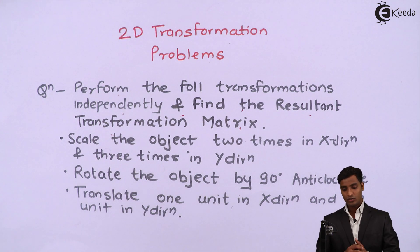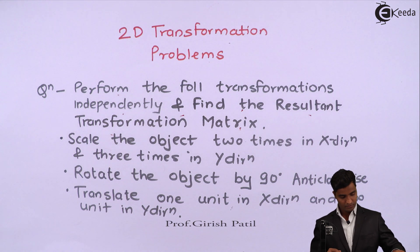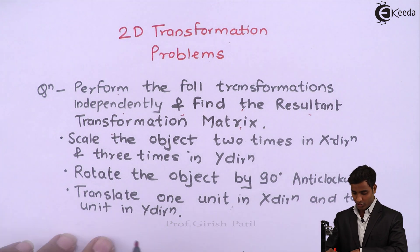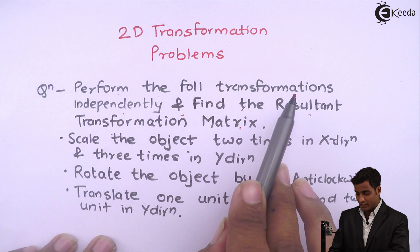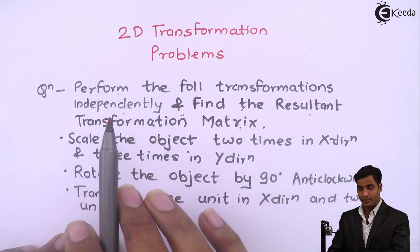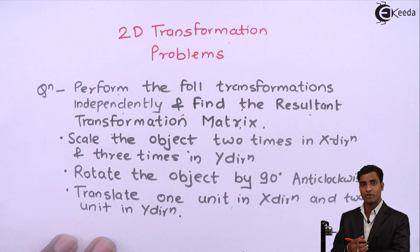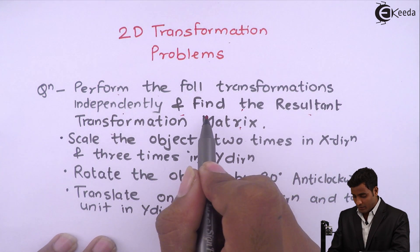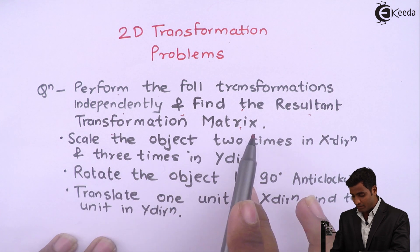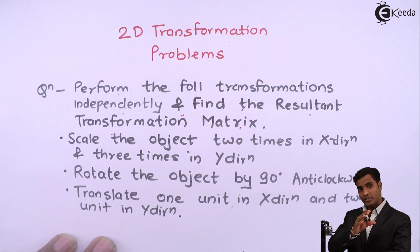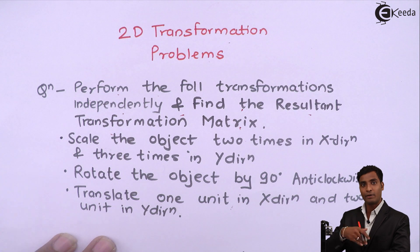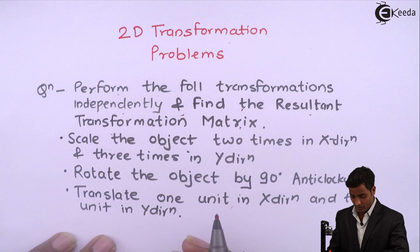Now we will start 2D transformation problems. The first problem says to perform the following transformations independently and find the resultant transformation matrix. Resultant transformation means we have to find the total transformation which we will get by performing all the given transformations.